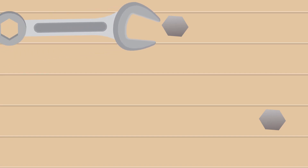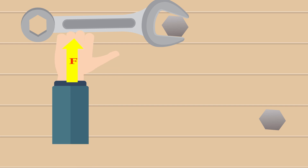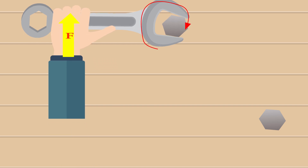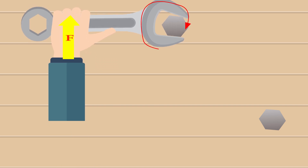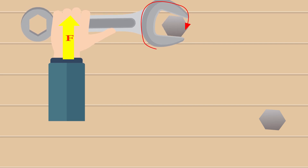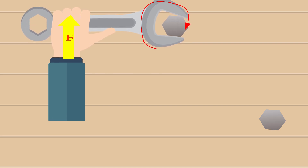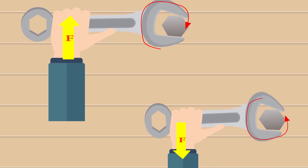Principle of Movements. A force that turns a spanner in the clockwise direction is generally used to tighten a nut. The torque or movement of the force so produced is called clockwise movement.